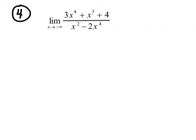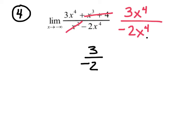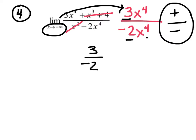Number four: pull out the biggest term on top — 3x to the fourth — and on the bottom — negative 2x to the fourth. Same over same, so take the ratio of the coefficients: three over negative two. But slow down and check the signs. Plugging in negative infinity: raising to the fourth gives positive, so positive 3 on top; raising to the fourth gives positive times negative, so negative 2 on bottom. Answer is negative three halves.